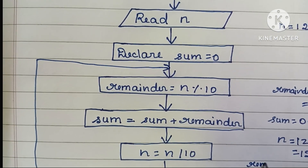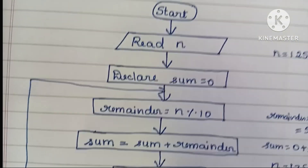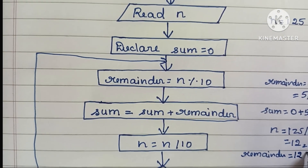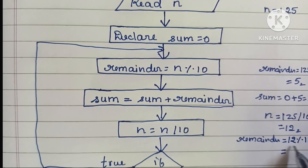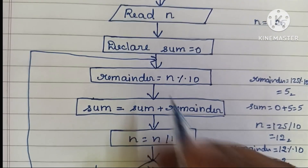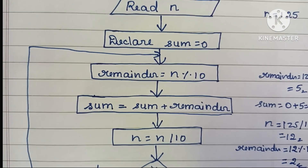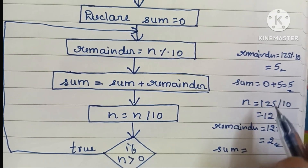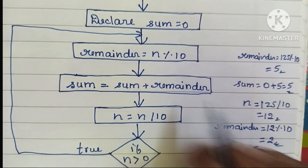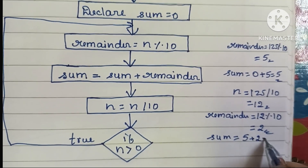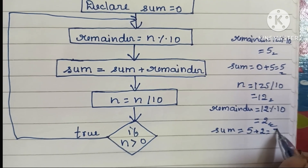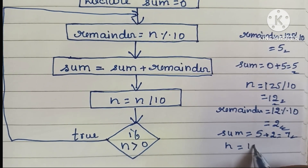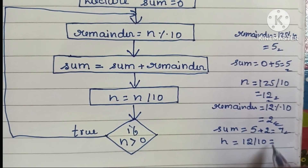The condition is: if N is greater than 0, we continue. Remainder is equal to N modulo 10 — N value is 12, so 12 modulo 10 gives remainder equal to 2. Then sum is equal to sum plus remainder: 5 plus 2 gives sum equal to 7.